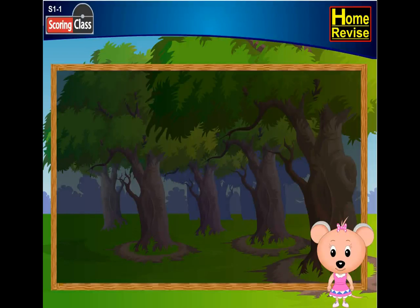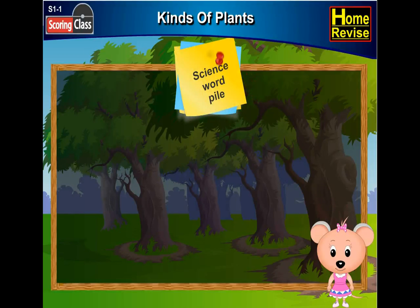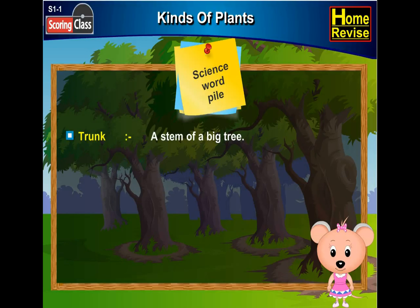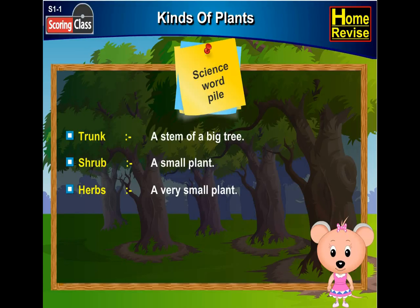Chapter 1: Kinds of Plants. Science Word Pile — let us first study the meanings of some important words in this chapter. Trunk: a stem of a big tree. Shrub: a small plant. Herbs: a very small plant.